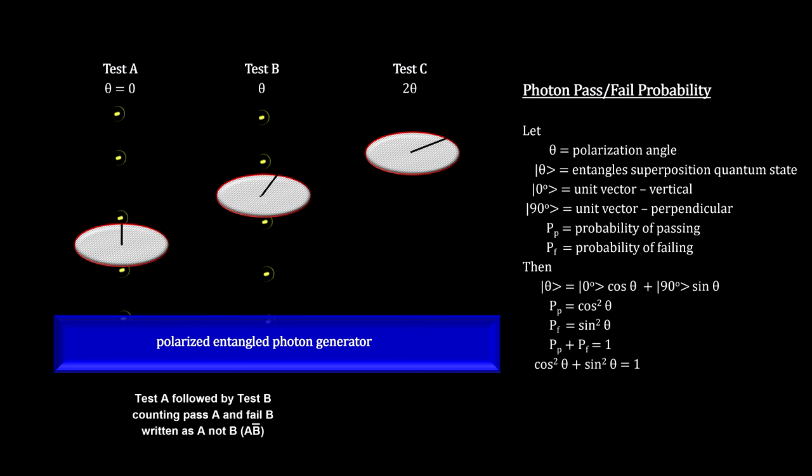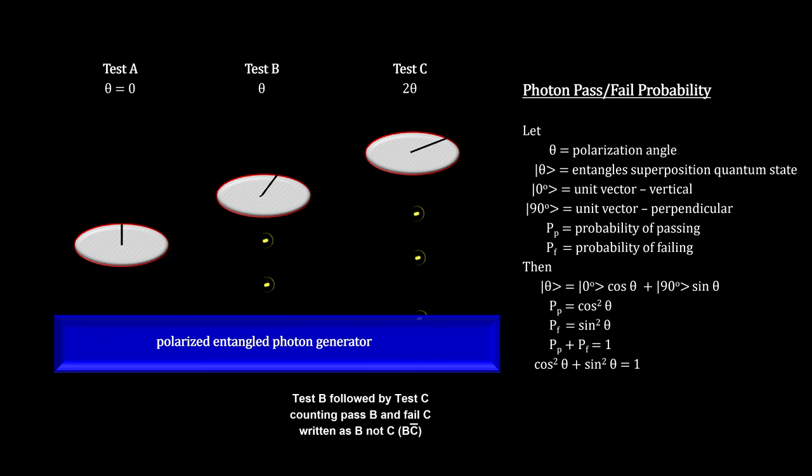What Bell was looking for are the number passing test A, followed by failing test B, called A-not-B. The number passing test B, followed by failing test C, called B-not-C. And the number passing test A, followed by failing test C, called A-not-C.